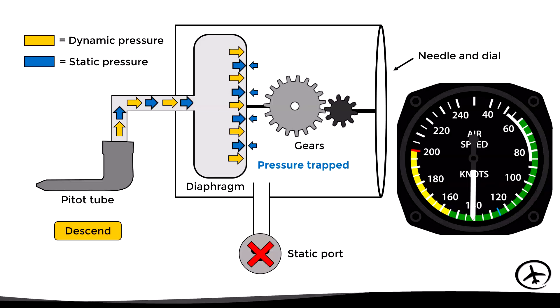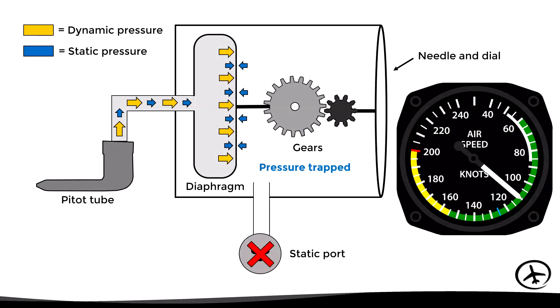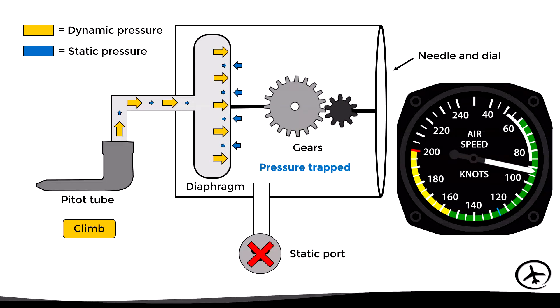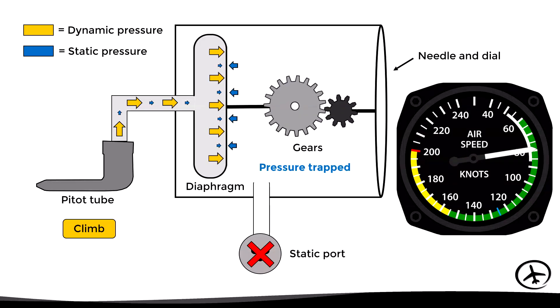Conversely, if the aircraft climbs, the static pressure entering through the pitot tube decreases while the trapped static pressure in the case remains constant. This causes the diaphragm to contract and the instrument to indicate a lower speed.